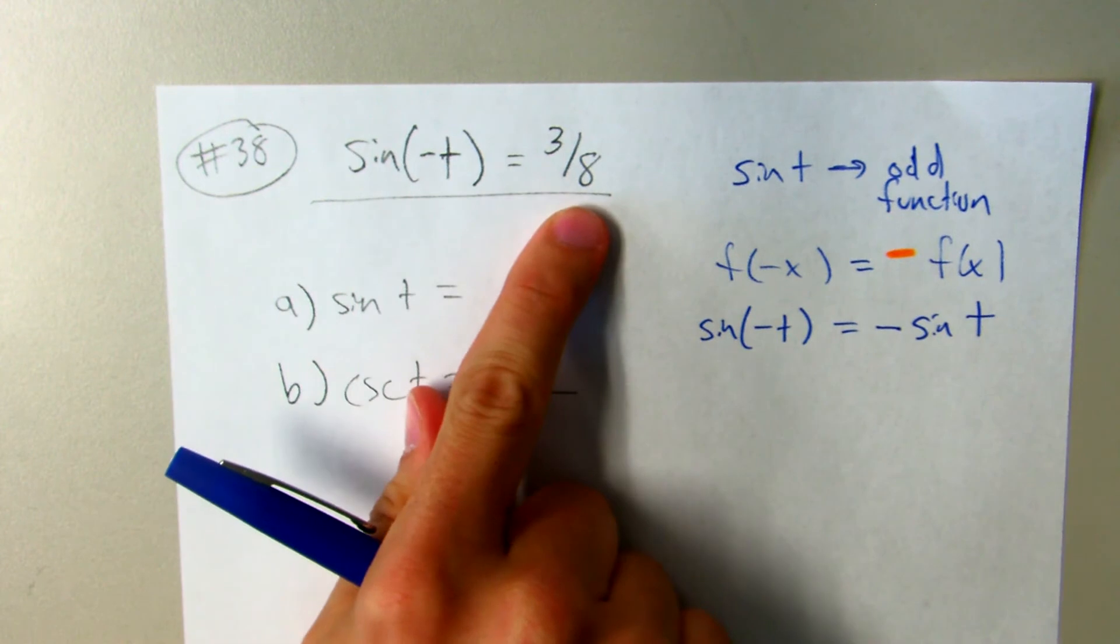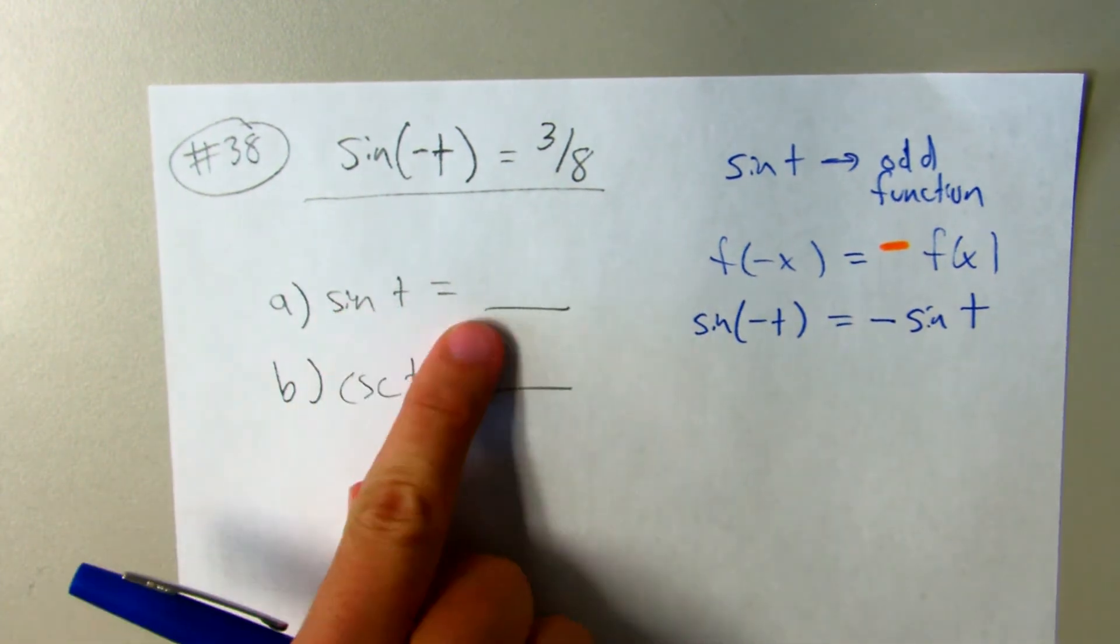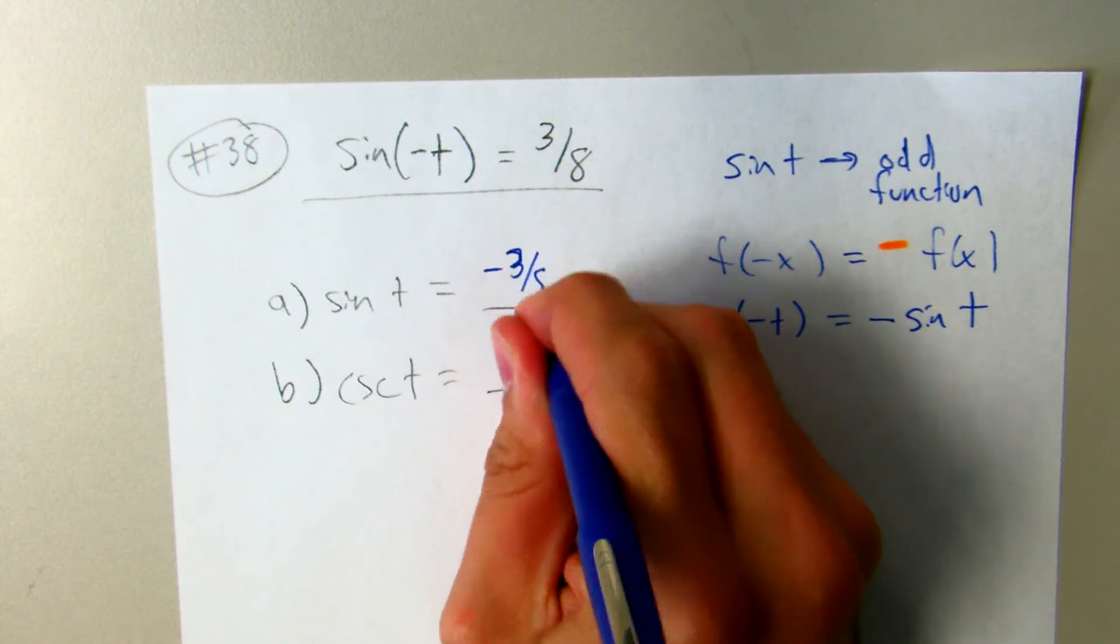So the sine of negative t is equal to the opposite of the sine of t. So if the sine of negative t is 3/8, that means the sine of positive t is negative 3/8.